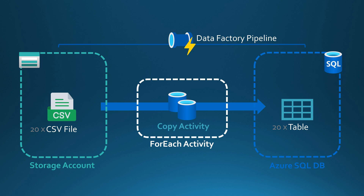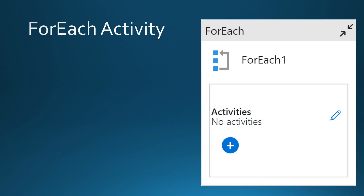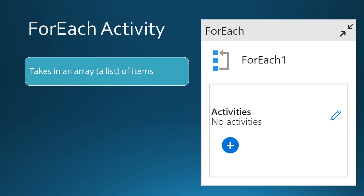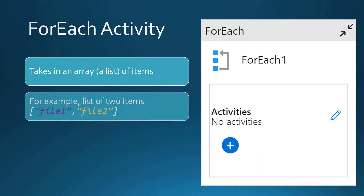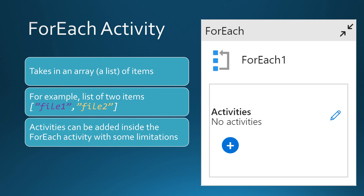Let's check out in more detail how this ForEach activity works in Data Factory. ForEach activity is another control activity, like the conditional activities covered in the previous video. The ForEach takes in an array of items — basically a list of items — and loops through that list, executing all the activities inside the ForEach for those items. Here I have an example of how such an array would look. Almost all activities can be added inside the ForEach activity, but with some limitations, like the fact that we cannot add another ForEach activity inside another ForEach activity.